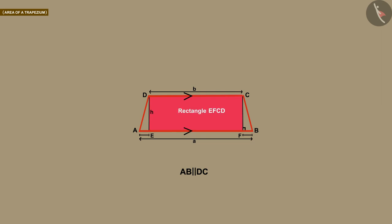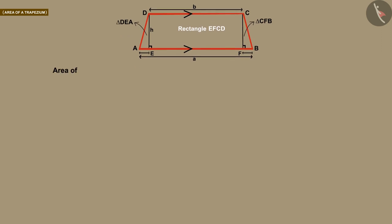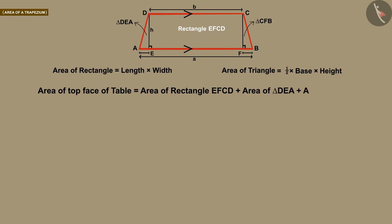And two right angle triangles DEA and CFB. Kritika knows well how to find the area of rectangles and triangles. By adding these she finds the area of the table and a cloth of the same measurement is brought from the market to make tablecloth.